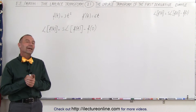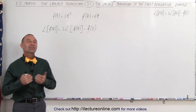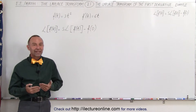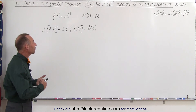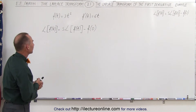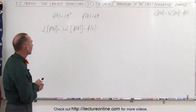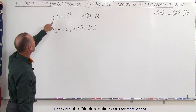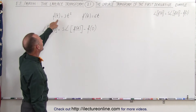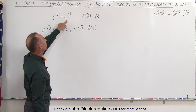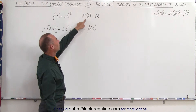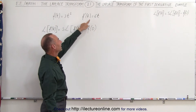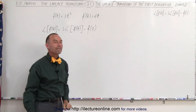Welcome to Electroline. Now let's see an example of how to find the Laplace transform of a first derivative of a function. So let's say we have a function f of t equals 3t squared, and therefore the first derivative of that function is 6t.